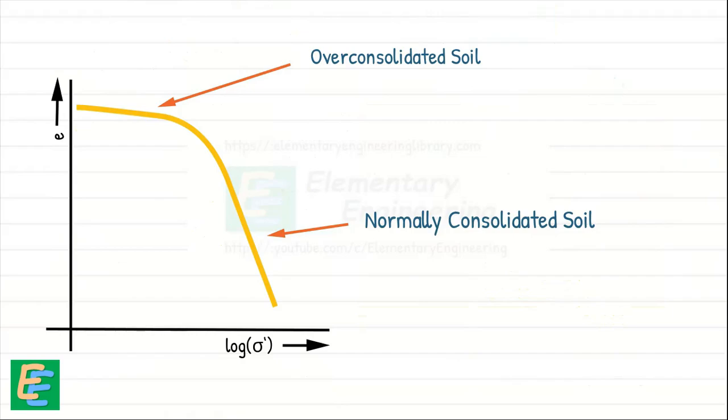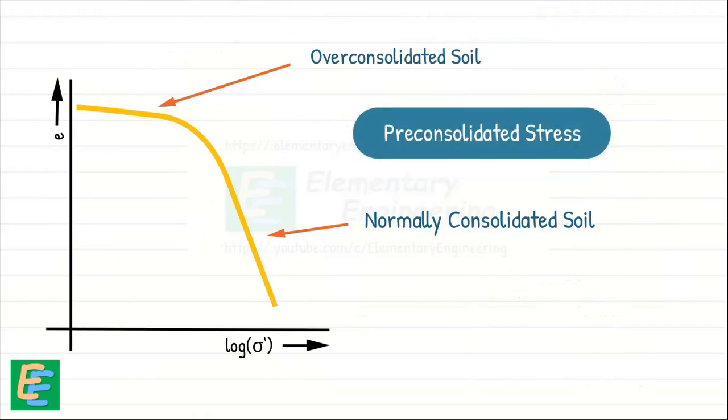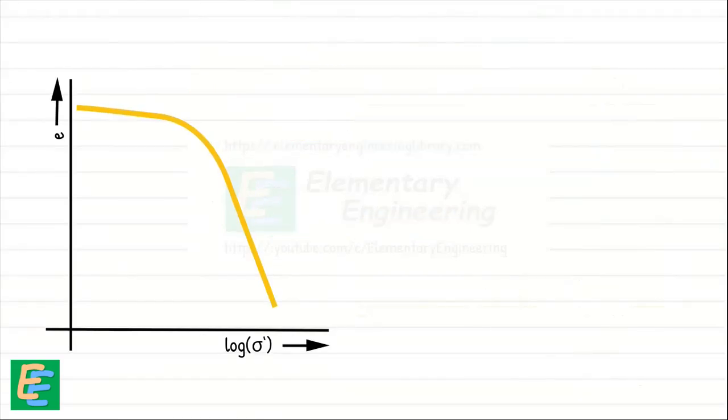The past maximum load known as pre-consolidation stress lies somewhere within this range. To obtain that, we determine a point by the judgment of eye on the curve, say point A, where the curvature is maximum. Then we draw a tangent to the curve at this point A and name it as AB.